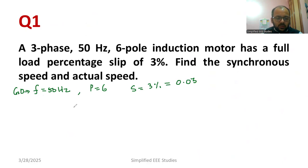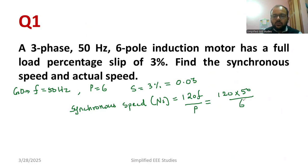You need to calculate the synchronous speed. The synchronous speed is the speed of rotating magnetic field, given by Ns = 120*F/P. Substituting the values: 120*50 divided by 6, this becomes 1000 RPM. That's the right answer.